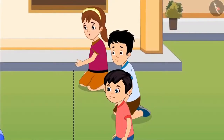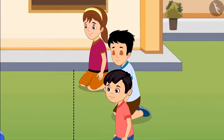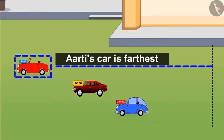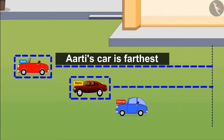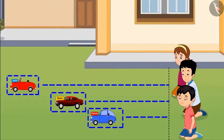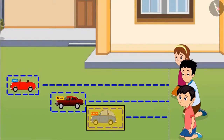'I won, I won! My car is the farthest from here. Sonu's car is behind my car. And Chotu, your car is nearest to us.' So children, did you see? Aarti's car went the farthest and Chotu's car the nearest.